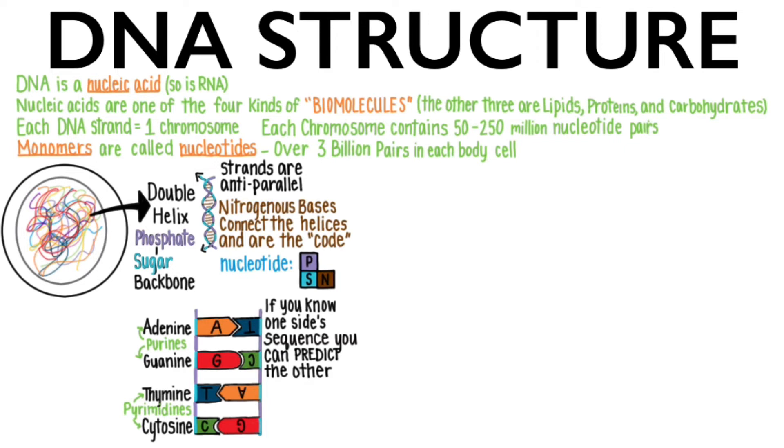You can remember this by apples on trees and gas for cars. If you always say it this way, you'll also remember that adenine and guanine are the big purines and thymine and cytosine are the smaller pyrimidines.